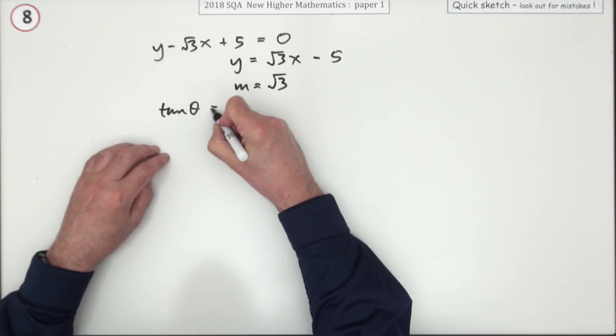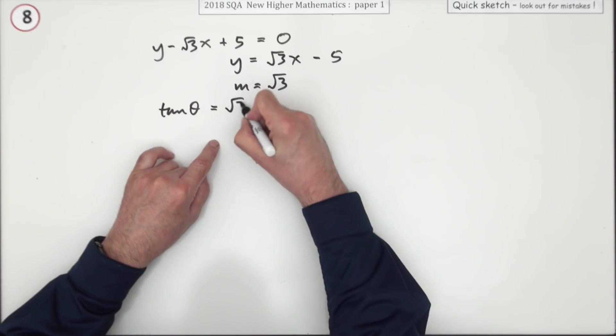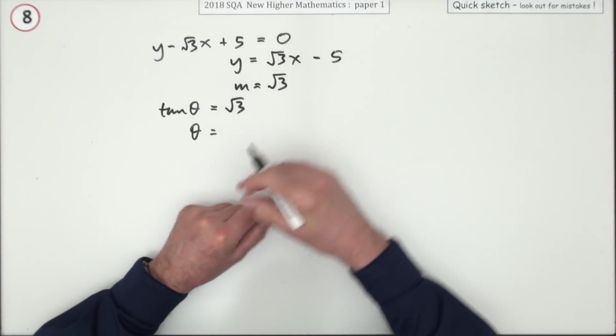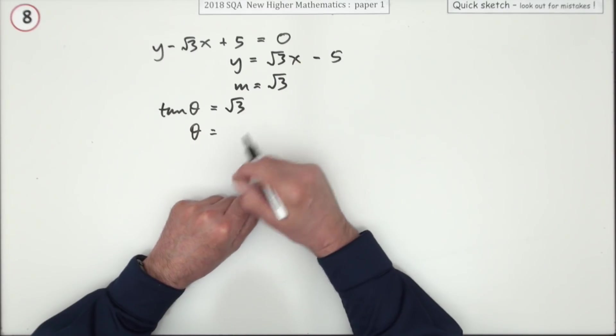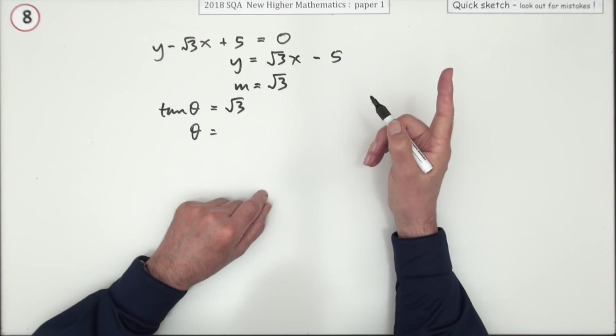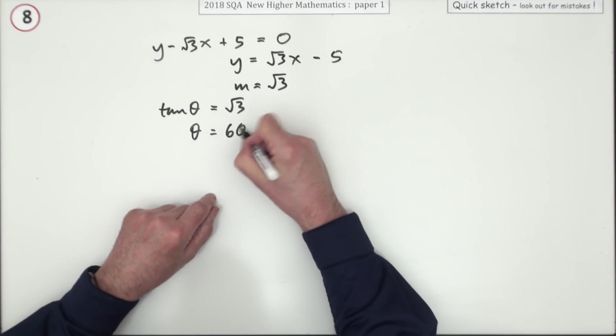And then the next part would be this: that angle you're looking for, the tangent of that angle will be √3, and that's one of the ones you know. It has to be, it's paper one isn't it. √3, it's either 30 or 60. √3 is more than one, so it's more than 45, so it's 60 degrees.